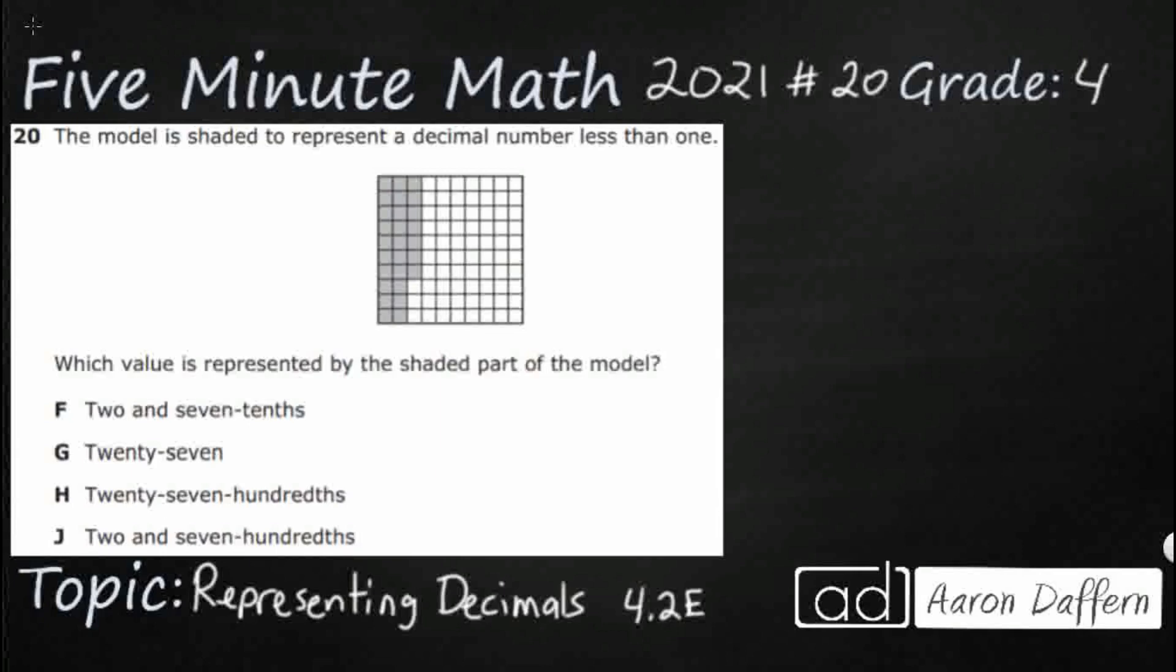So we have a model here and it's shaded to represent a decimal number less than one. So we need something that is less than one, that's going to be big for us. This is pretty standard when we're looking at decimals.